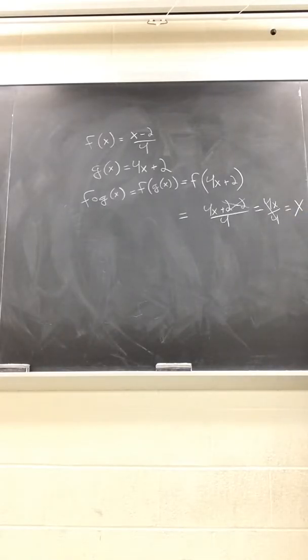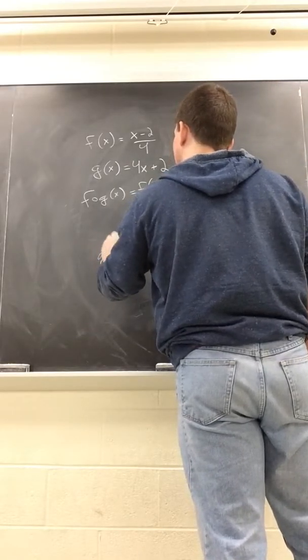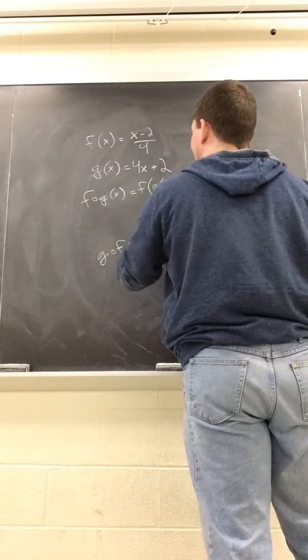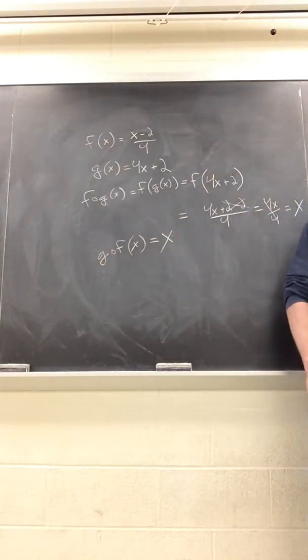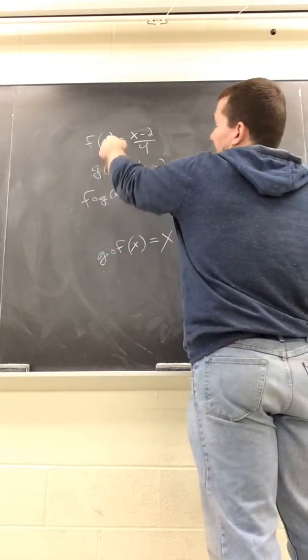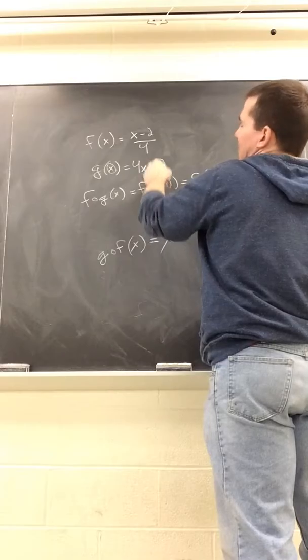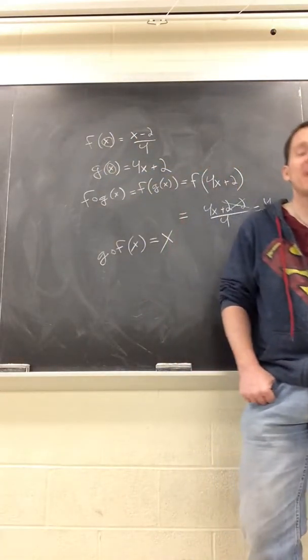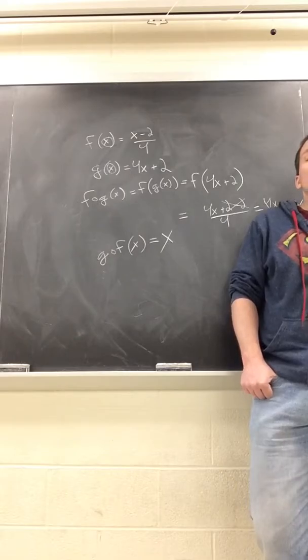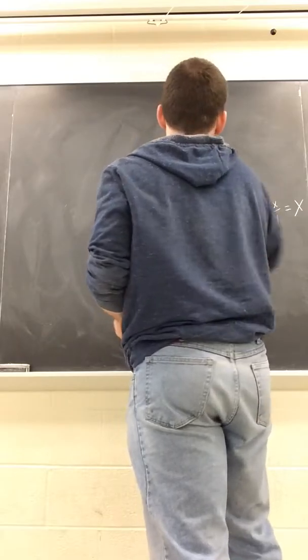I'm not going to take the time to do the algebra right now, but as it turns out, if you do g circle f of x, you get the same thing, x. The idea here is for either of these functions, we start with x, do something to it, do something else to it, and end up right back at x. In math, when that happens, we say these functions are inverses of one another.